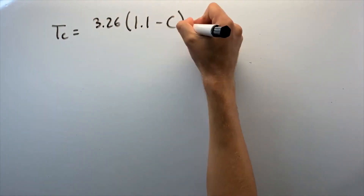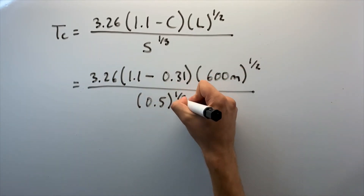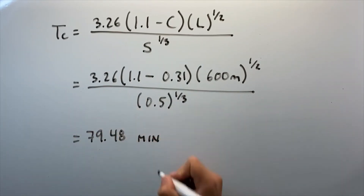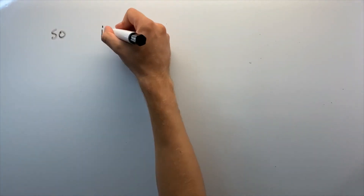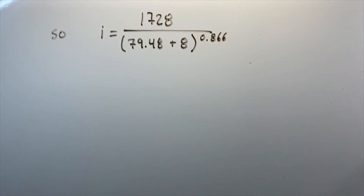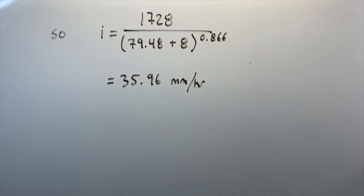Using the airport formula — Tc = 3.26 × (1.1 − C) × L^(1/2) / S^(1/3) — and plugging in our variables, we get a time of concentration of 79.48 minutes. We then use that to calculate rainfall intensity: I = 1728 / (79.48 + 8)^0.866, which gives us 35.96 mm/hr.